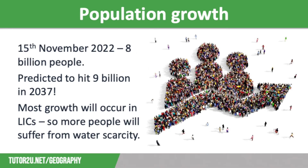In recent decades, the demand for water across the globe has increased significantly. The first and main reason is global population growth. In 1950, the world's population was estimated to be around 2.5 billion people, increasing to around 6 billion by 1998 and 7 billion in 2010. On the 15th of November 2022, the global population hit 8 billion, which was considered a huge milestone in human development, taking just 12 years to increase by 1 billion people. The global population is predicted to hit 9 billion by 2037, taking 15 years to increase by another billion, which does show that overall population growth is starting to slow down.